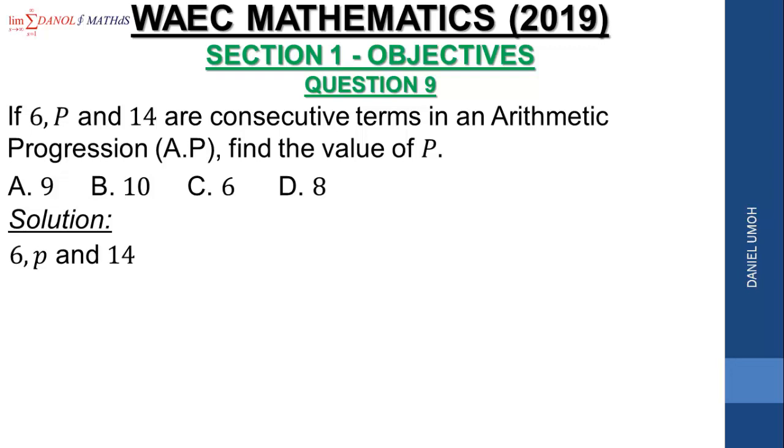Here, the common difference is the second term minus the first term. So the common difference here is P minus 6, or you can still see that the common difference can also be 14 minus P, since the terms are consecutive.